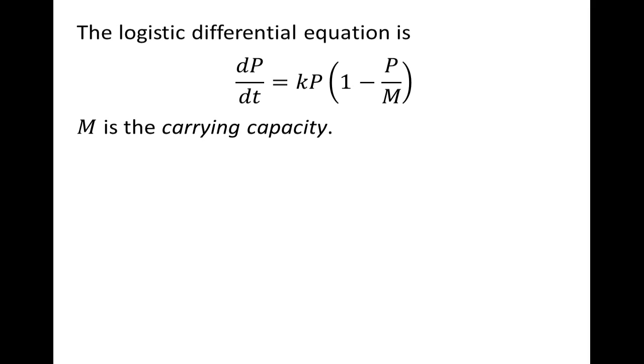M is what's known as the carrying capacity. That's the maximum population that our system can sustain. If our population starts off less than the carrying capacity, it can grow to that. If our population starts off greater than our carrying capacity, it's overcrowding and will dwindle down to the carrying capacity.